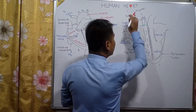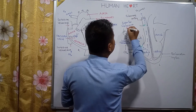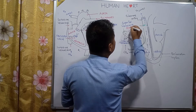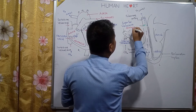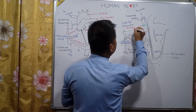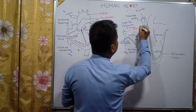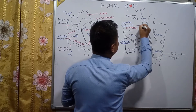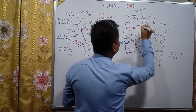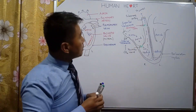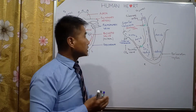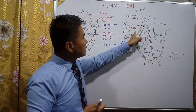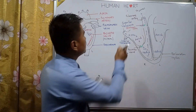The name of this valve is the pulmonary semi-lunar valve, associated with the pulmonary artery. When you write it in an exam, write the full term: pulmonary semi-lunar valve.